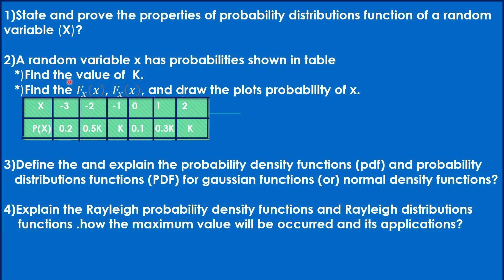The second question: a random variable X has a probability distribution shown in a table. Find the value of k. Also find F_X(x) and f_X(x), and draw the plots. The values of X are -3, -2, -1, 0, 1, 2, and the corresponding probabilities are 0.2, 0.5, k, k, 0.1, 0.3, k, k.